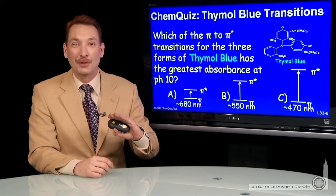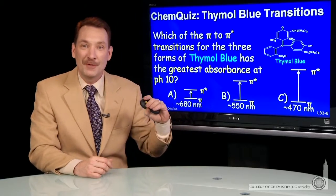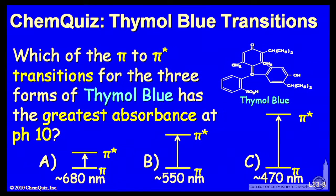Let's look at the indicator thymol blue and try to determine how the absorption spectrum would look. Which of the pi to pi star transitions—you can see this is a multiply conjugated system—will give rise to the colors of the various forms?